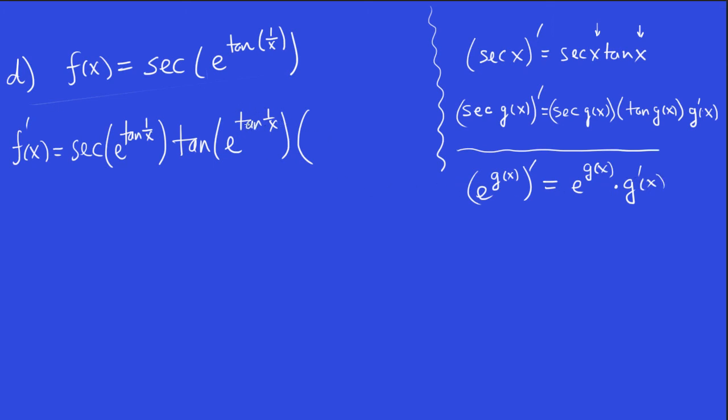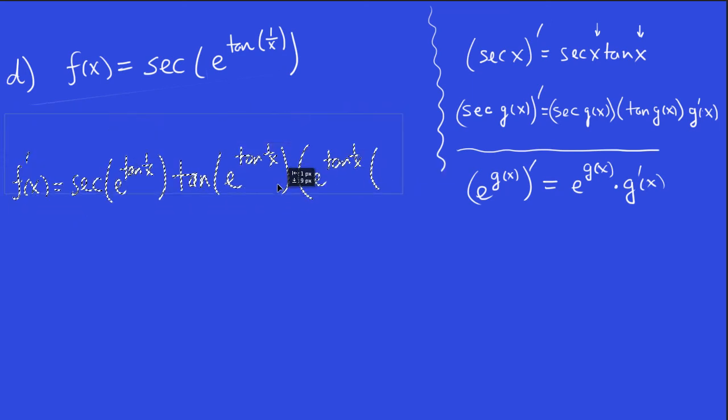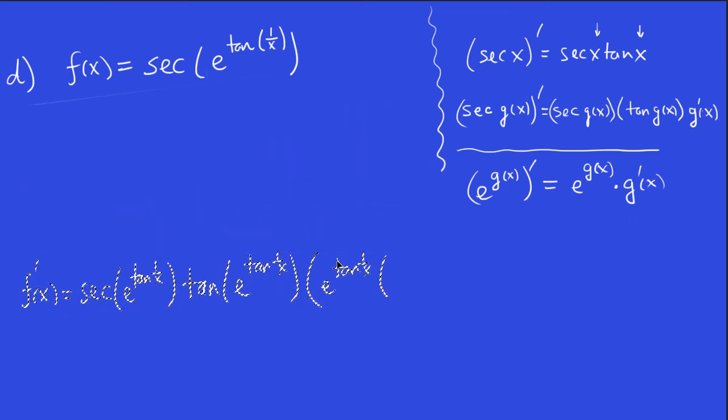So here I'm thinking of g of x is now being tan 1 over x, which is, well, the derivative of e to the tan 1 over x, according to this, is going to be basically itself, e to the tan 1 over x. But then afterwards, times the derivative of tan 1 over x. I'm running out of room. I'm just going to go down here a little bit. So where are we at again? We're at this stage right here. We have to multiply by the derivative of tan 1 over x.